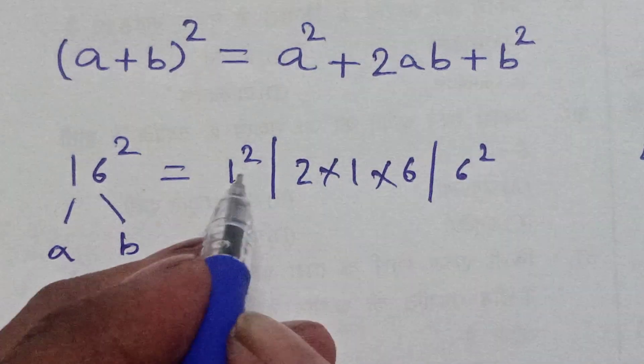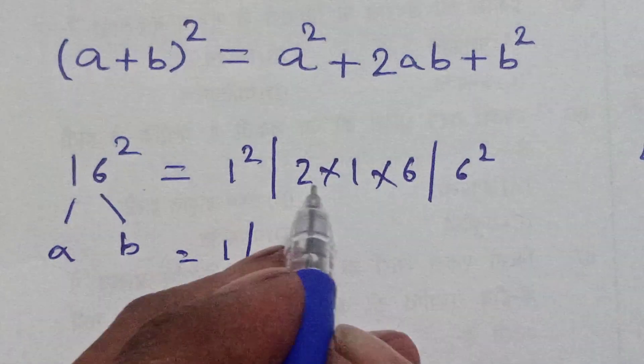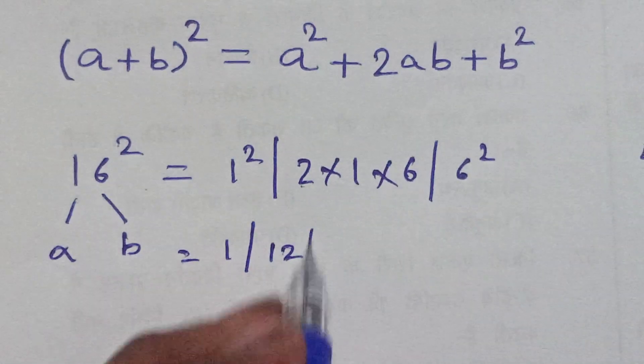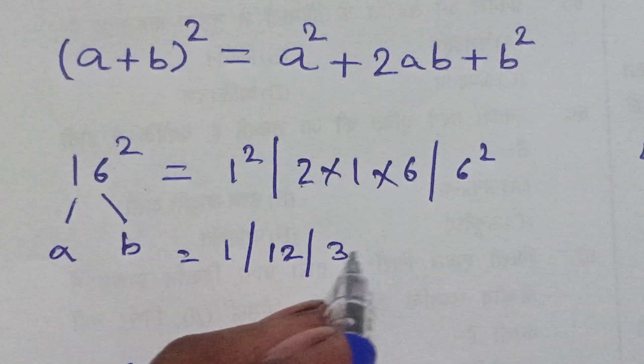Then 1 square is 1, 2 times 1 times 6 is 12, 6 square is 36.